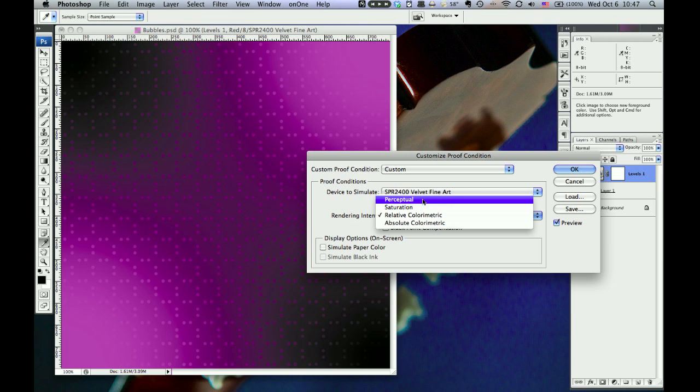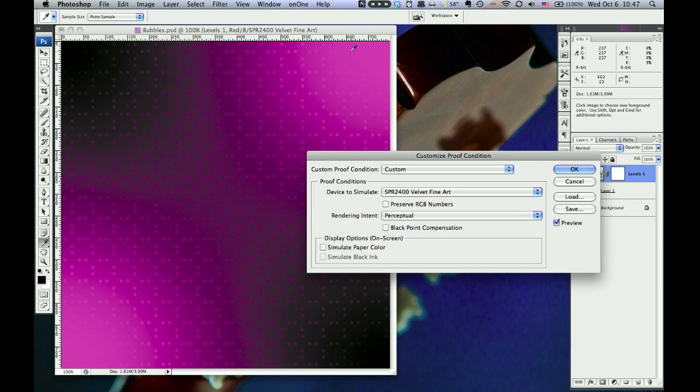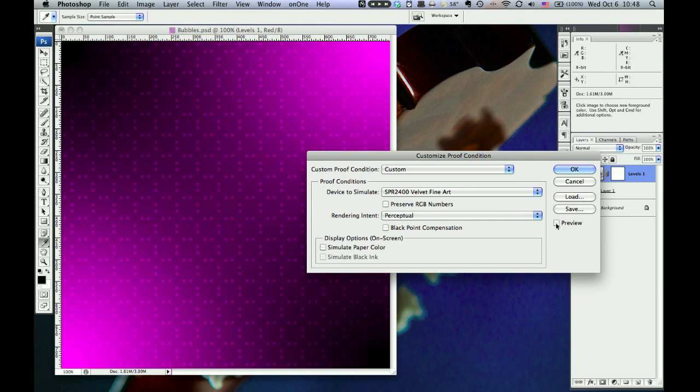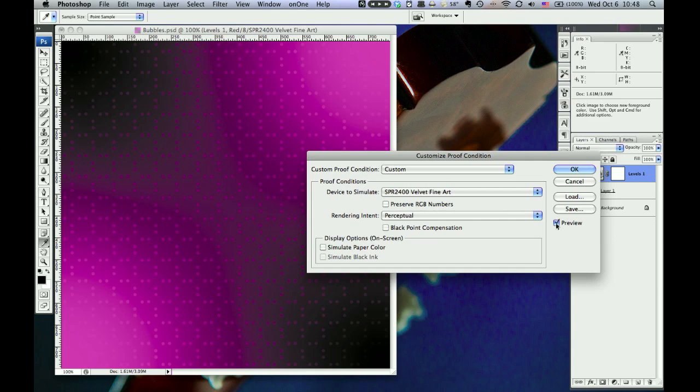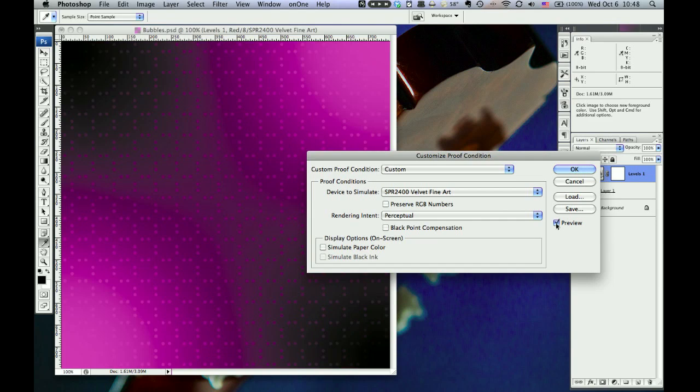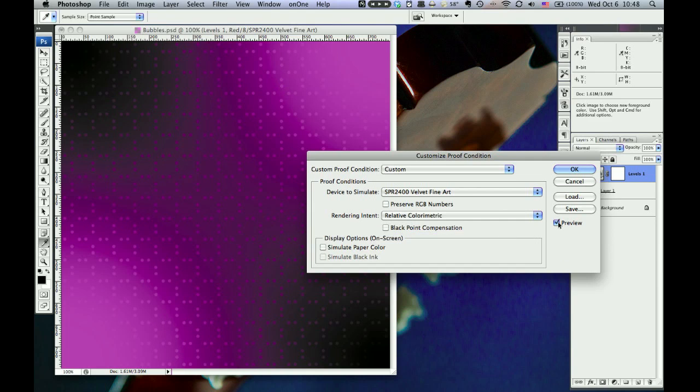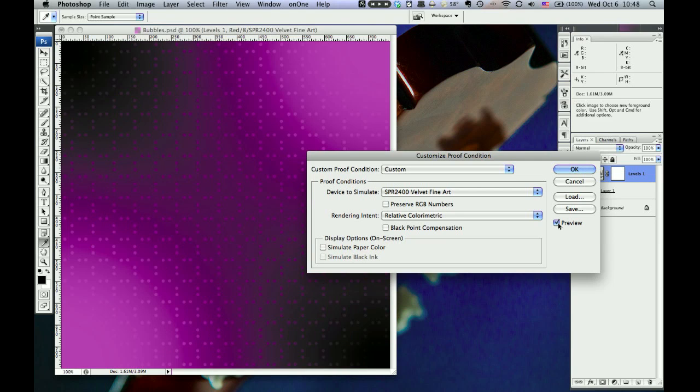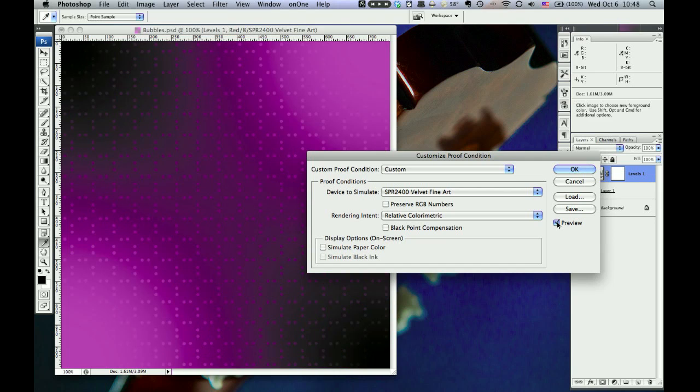Now if I switch the rendering intent to Perceptual, you can see a big change. For one thing, I can still see the dots all the way to here. So even though these are all out-of-gamut, Perceptual has compressed the source color space to the Epson Velvet Fine Art Paper's color space so that you can still see the details in these out-of-gamut areas. But it's also shifted the colors. If I turn on and off Preview, here's the original image, and you can see Perceptual has made it sort of pinkish or purplish. But if I switch to Relative Colorimetric, turn that on and off, it's more loyal to the original magenta color, with a sacrifice that we lost some detail in the out-of-gamut areas.